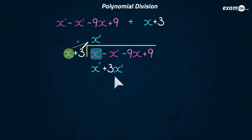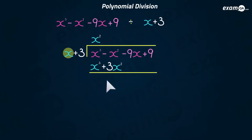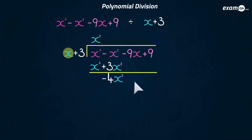Now comes the subtraction. x cubed minus x cubed is nothing. Then we have minus x squared minus three x squared, which is minus four x squared. Then we have minus nine x subtract nothing, which is minus nine x. And nine subtract nothing, which is nine.